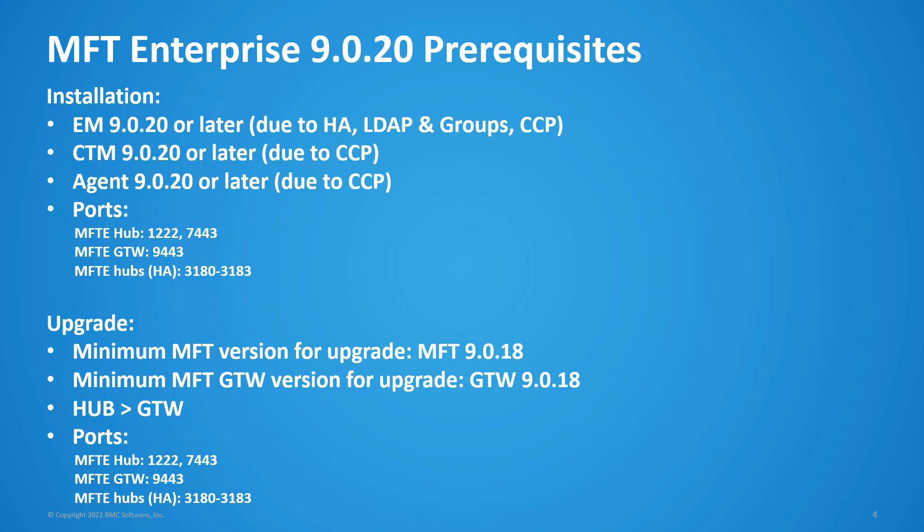For MFT Enterprise 920 installation, it requires all components to be on version 920. The following ports must be opened: on the MFT hub, ports 1222 and 7443; on the MFT gateway, port 9443.